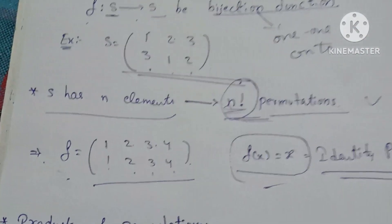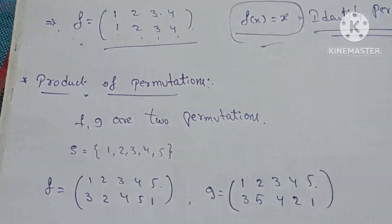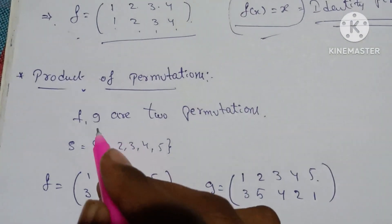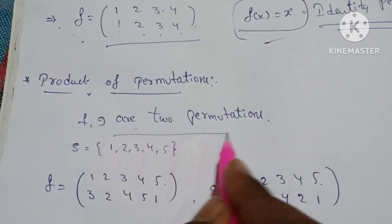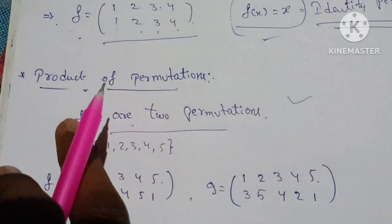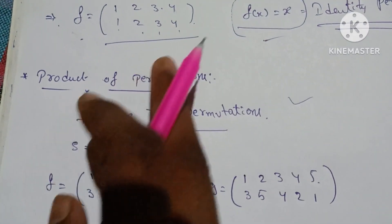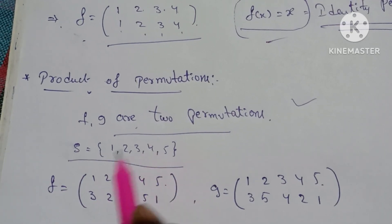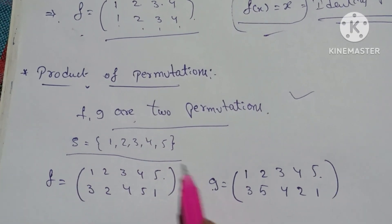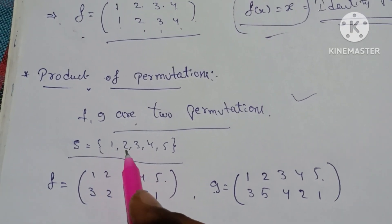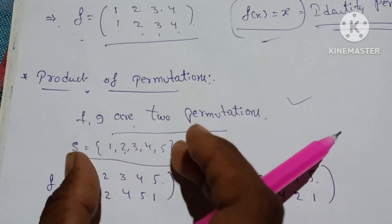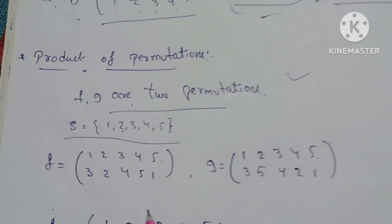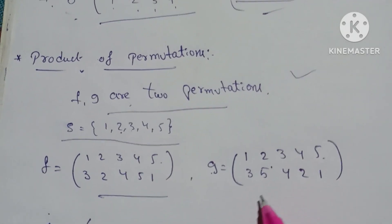Product of Permutations. We take 2 permutations and form their product. Set formation: consider the set 1, 2, 3, 4, 5. F is equal to h, G is equal to h — these are our two permutations.